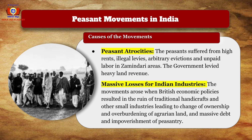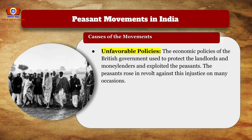The peasant movements were massively about the losses of Indian industries when the British economic policy resulted in the ruin of traditional handicrafts and other small industries, leading to a change of ownership, overburdening of agrarian lands, massive debt, and impoverishment of the peasantry. The economic policies of the British government were used to protect the landlords and moneylenders and to exploit the peasants, gaining more favor from the big and powerful classes of society.